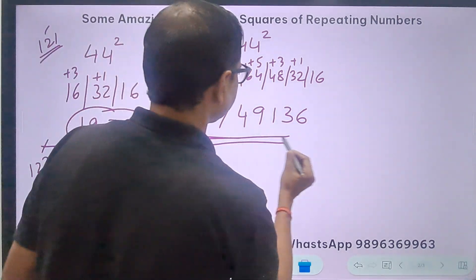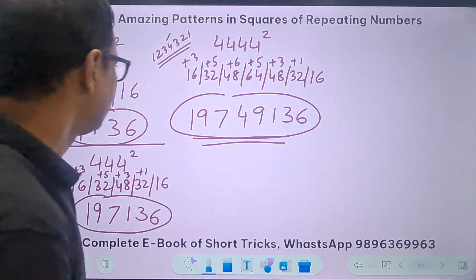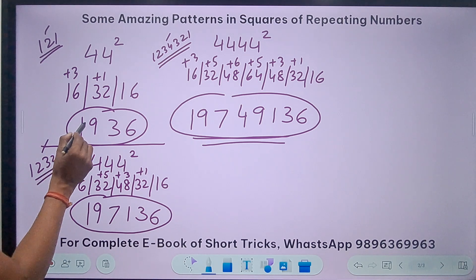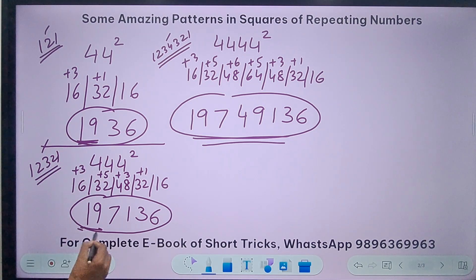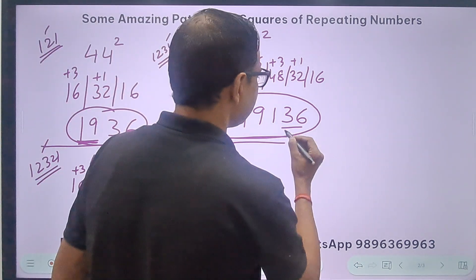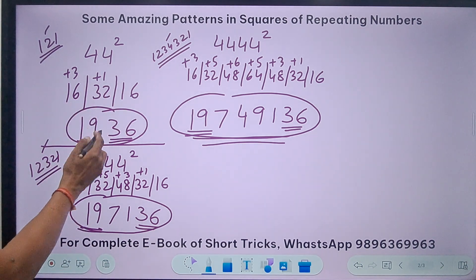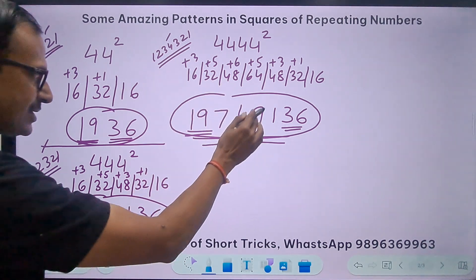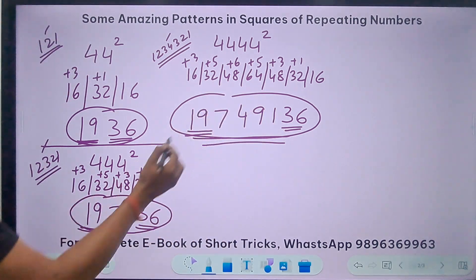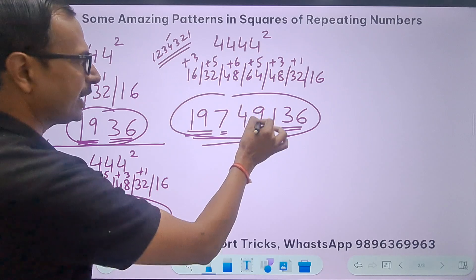Is there a pattern? In 44², the last two digits are 36, opening two digits are 19. In 444², it's also 36 at the end and 19 at the start. In 4444², same: starts with 19, ends with 36. In between: zero digits for 44², two digits for 444², four digits for 4444². And notice the digits 7 and 1 are split with a special number 49 in between.